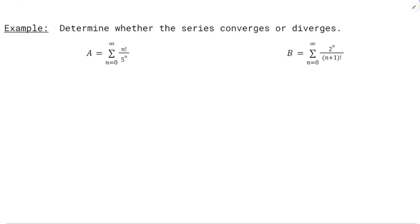Now we'll do a couple of examples where we look at a series and determine whether it converges or diverges using the ratio test. These are both good because they've got factorial in them. My general advice is that the ratio test is really good for anything that's got a mix of types in it — like factorial and a geometric aspect like 5 to the n, or p-series and factorial, something like that. If you get a mix, you're probably going to want to go with the ratio test.